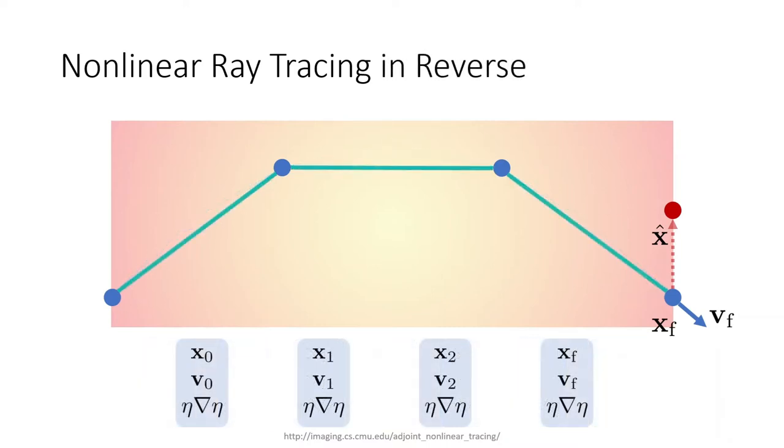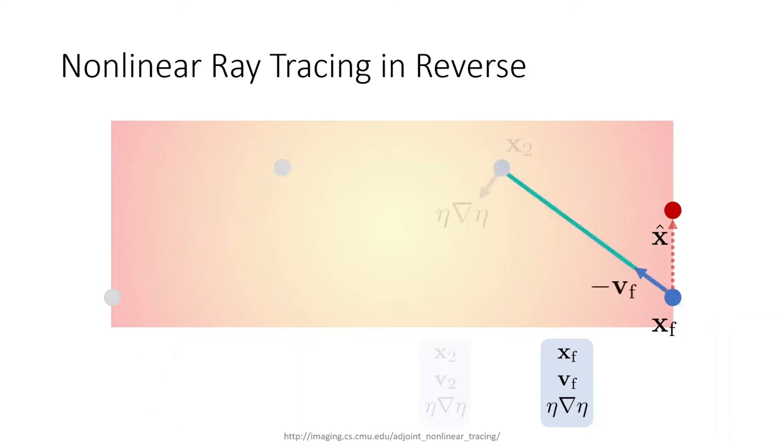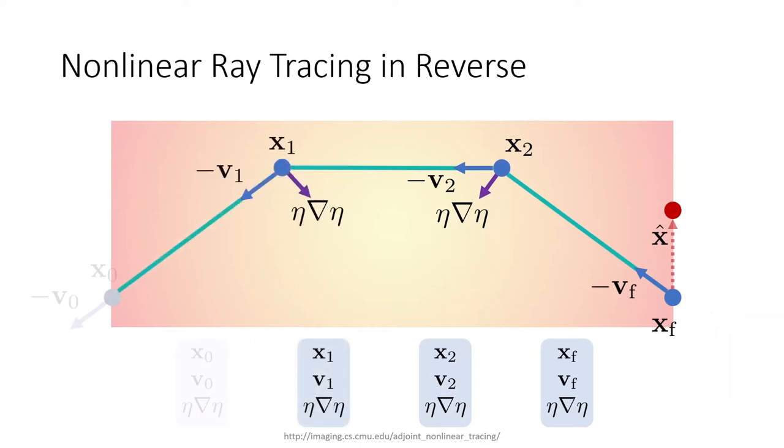We address this problem by leveraging the fact that nonlinear ray tracing is reversible, and that using the adjoint state method, it is possible to circumvent the need to record the trajectory while calculating the gradients used in optimization.